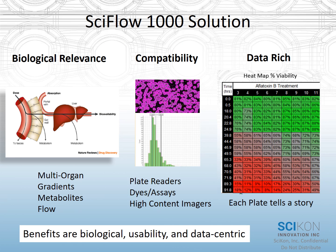There are three key features or three key advantages to the SciFlow 1000: biological relevance, compatibility, and the type and amount of data that's generated from each fluidic culture system. To hit the highlights of the biological relevance, SciFlow allows you to connect multiple organ systems within an interconnected microfluidic network, so you can have different cell types communicating across one interconnected row of wells.